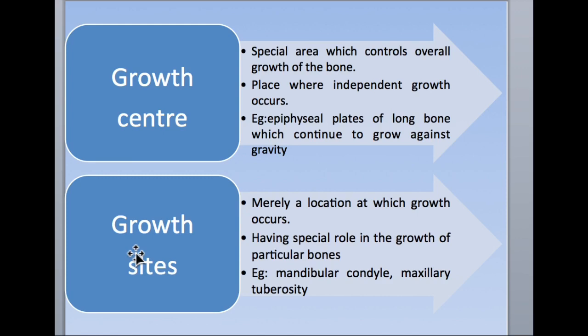Regarding growth center and growth site — these are mainly present in individual bones. The growth center has a particular location for the maxilla and a particular location for the mandible, and the entire maxilla is formed by the growth center. So, in order to form an individual bone like maxilla or mandible, a growth center is required.